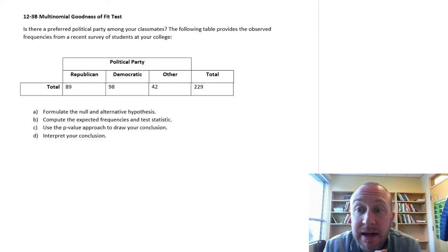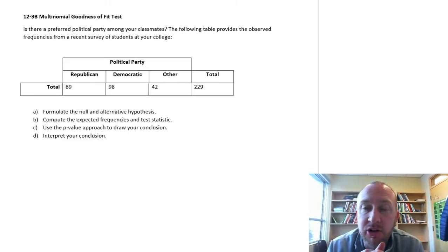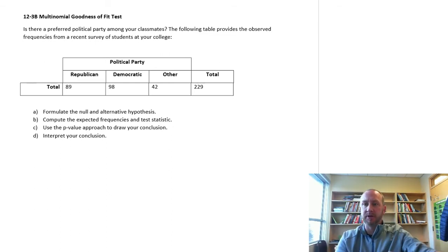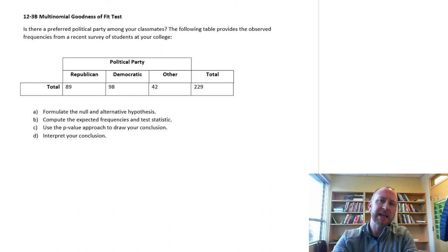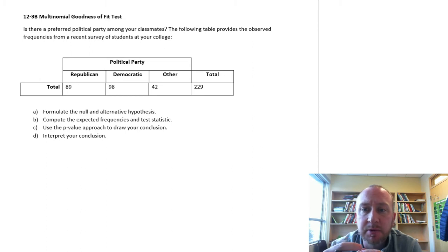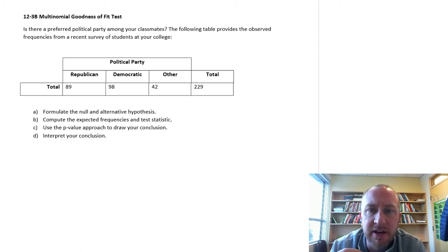Hello and welcome back to another exercise looking at a multinomial goodness of fit test. Does this data appear to fit a multinomial probability distribution? In this exercise we're looking to see if there is a preferred political party among your classmates. This following table provides observed frequencies from a survey of students at your college.